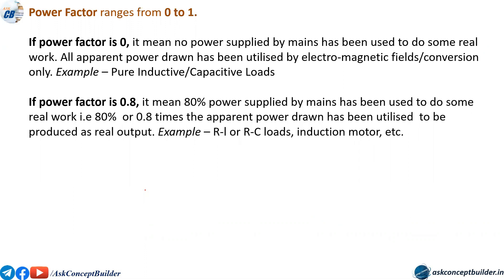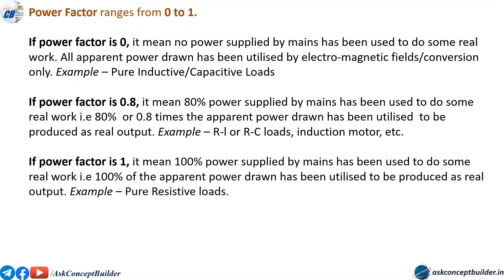If the power factor is 0.8, it means that 80% of the power supplied by the mains has been used to produce some real work — that is, 0.8 times the apparent power drawn has been utilized to produce some real output. Examples of such loads include synchronous motors, RL loads, RC loads, and induction motors. The 0.8 power factor means 80% of the power drawn from the supply is utilized for real output, and the rest is utilized as reactive power for electromechanical conversion within the machine.